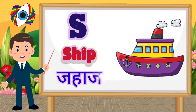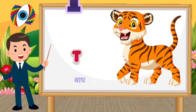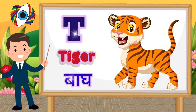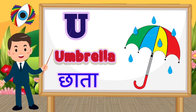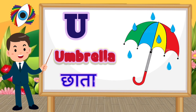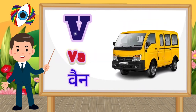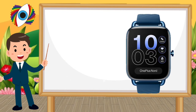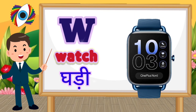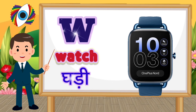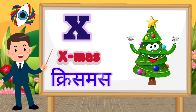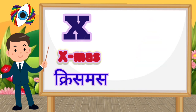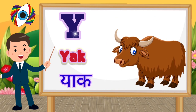S for Ship. T for Tiger. U for Umbrella. X for X-Moss. Y for Yak.